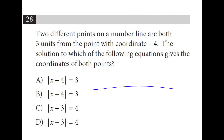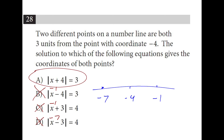If this is our number line and here is negative 4 — if I go 3 to the left, I'm at negative 7; if I go 3 to the right, I'm at negative 1. If I plug negative 1 into these equations, it's not going to work. If I plug in negative 7, it's not going to work either. A is the only one that works for both.